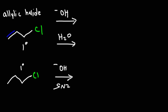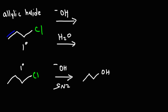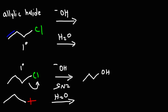Tertiary alkyl halides favor SN1. So with hydroxide, the hydroxide will come from the back, expelling the chlorine, giving us an OH. But what if we were to use water with propyl chloride? In order to get the SN1 reaction, the leaving group has to leave, but the problem is primary carbocations are not stable, so we don't get the SN1 reaction here.